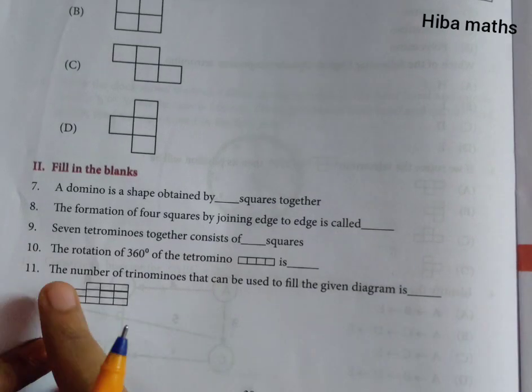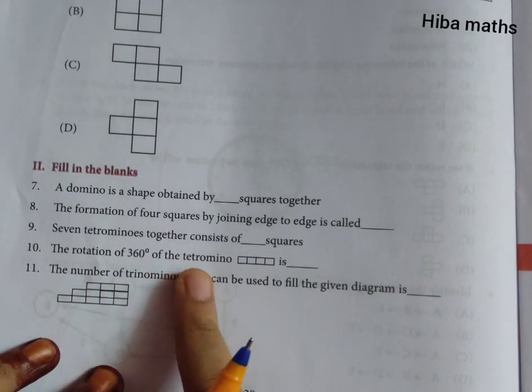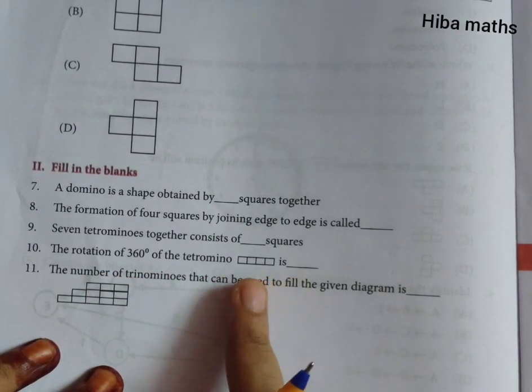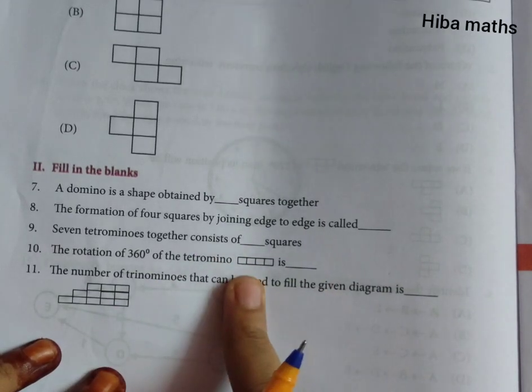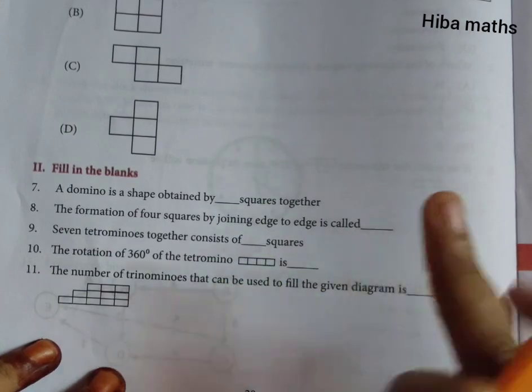10th question, the rotation of 360 degree of the tetromino. For 360 degrees, if you have any design, it will be the same design. So the answer is the same.